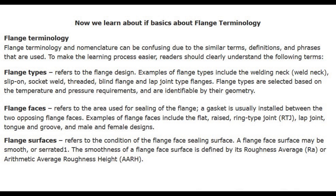Flange faces refers to the area used for sealing of the flange. A gasket is usually installed between the two opposing flange faces. Examples of flange faces include the flat, raised, ring-type joint (RTJ), lap joint, tongue and groove, and male and female designs. Flange surfaces refers to the condition of the flange face sealing surface; a flange face surface may be smooth or serrated. The smoothness of a flange face surface is defined by its roughness average (RA) or arithmetic average roughness height (ARH).